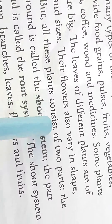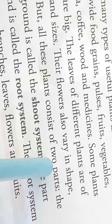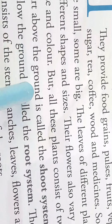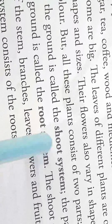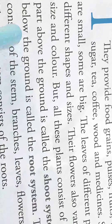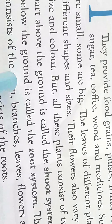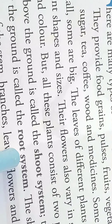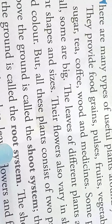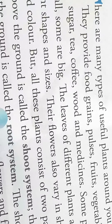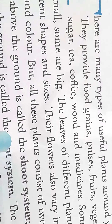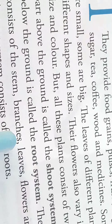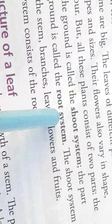But all these plants consist of two parts. The part above the ground is called the shoot system, and the part below the ground is called the root system. Basically, plants have two main parts: above the ground is the shoot system, and under the ground is the root system.